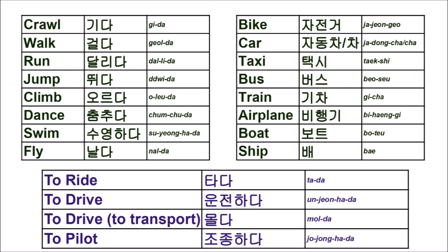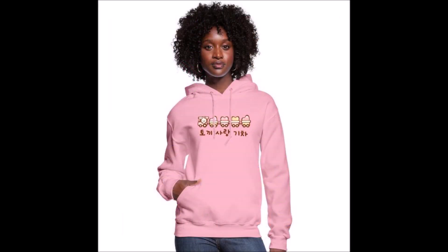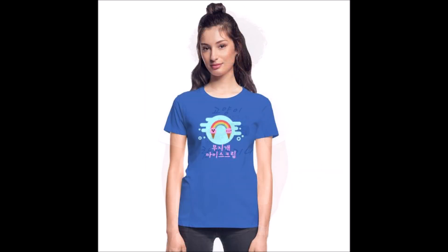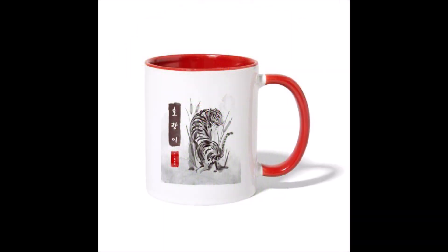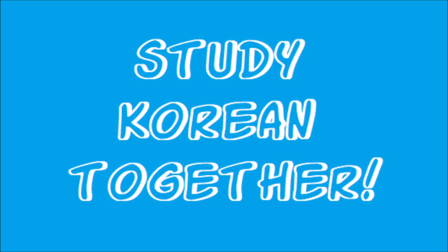Here is a chart of everything we learned today. You will also find it linked in the description along with the transcript and my merch. I've got designs of some of the vocabulary we learned today, like this cute bunny love train, and this cat bike. I have over 40 different designs, and wearing a Korean shirt is a great conversation starter and a good way to meet a friend to practice Korean with. Thank you for studying with me.